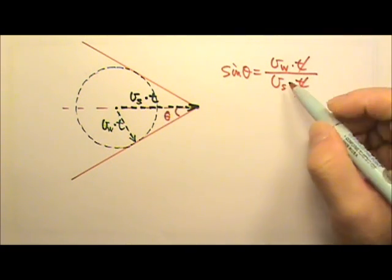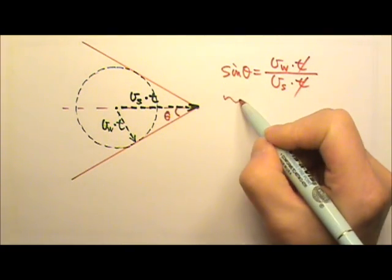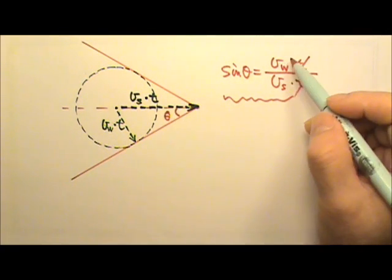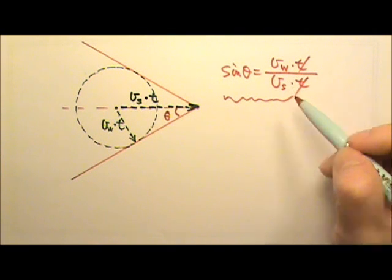And of course, we can cancel the time, so we get this equation right here. That relates the half angle of the shock wave cone and the speed of the wave to the speed of the source.